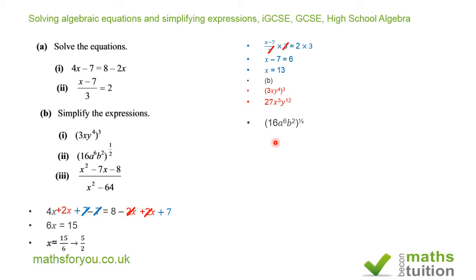For (16a⁶b²)^(1/2), raising to the power of 1/2 is the same as finding the square root. The square root of 16 is 4. By the law of indices, a⁶ becomes a³ (6 × 1/2 = 3), and b² becomes b¹ (2 × 1/2 = 1). The answer is 4a³b.